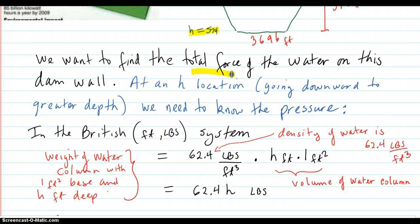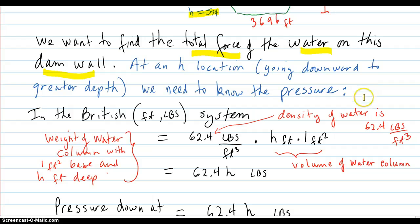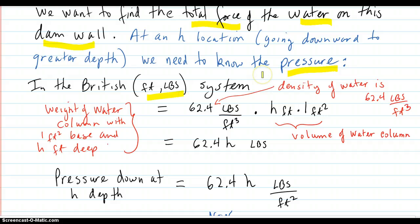Okay, so we want to find the total force of the water on this dam wall. At an h location going downward to greater depth, we need to know the pressure there because the force is going to be pressure times the area. So in the British foot-pound system, that's what we're going to do this problem in. The weight of the water column with a one foot square base rectangular column and h feet deep is going to be the water density, which is 62.4 pounds per cubic foot for regular water, times the volume of the water column, which is h feet tall and a one foot square base.